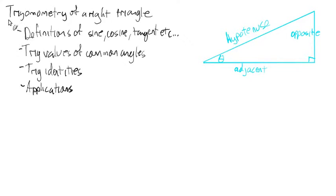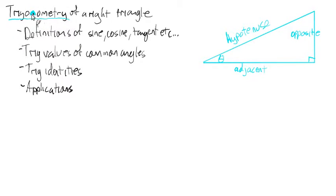So, trigonometry — 'trig' coming from triangle. Trigonometry: the 'nometry' part of the word means measurement. So, measuring triangles. When we measure triangles, we take the sides and make ratios out of them. And that's what all of these trig functions, or values, are.